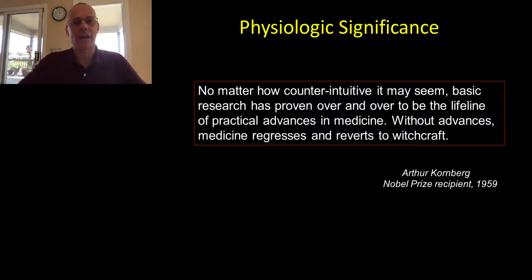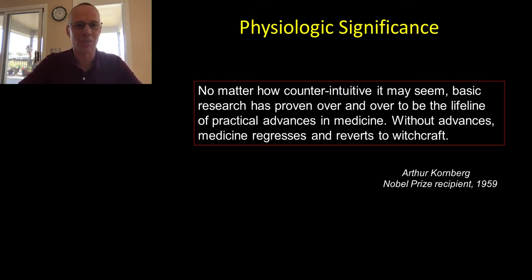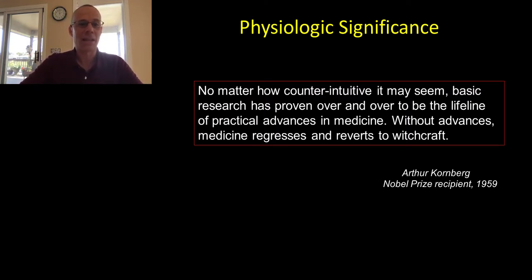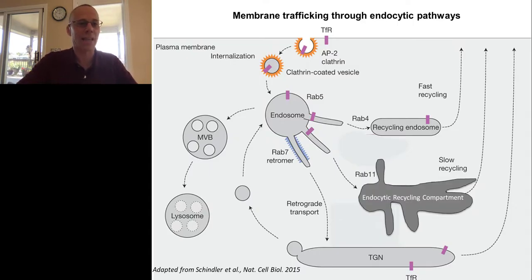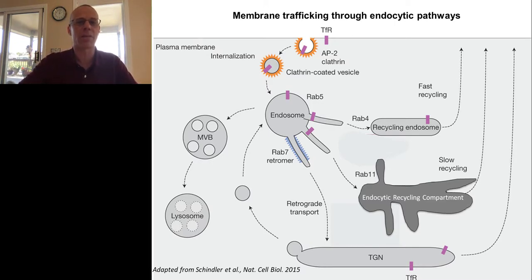First, a little plug for basic science — in these days when much of the science you hear about tends to be translational and focused exclusively on disease research, I'm a big proponent of basic biomedical science and curiosity-driven science. Arthur Kornberg, Nobel Prize recipient in 1959, said: 'No matter how counterintuitive it may seem, basic research has proven over and over to be the lifeline of practical advances in medicine. Without advances, medicine regresses and reverts to witchcraft.' For this reason, my laboratory has been focusing on basic understanding of membrane trafficking.